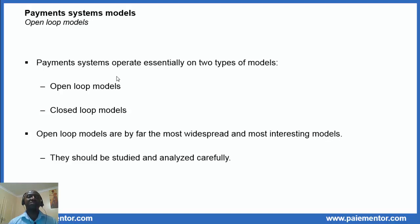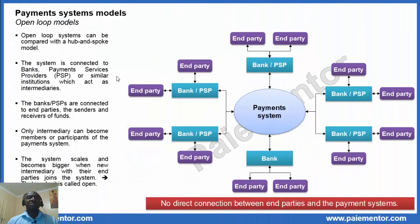In the rest of this video we will focus on open-loop models. So what are they? Open-loop systems can be compared with the hub-and-spoke model. The system is connected to banks, payment service providers or similar institutions which act as intermediaries, and the banks are connected to end parties — the senders and receivers of funds. So there is no direct connection between end parties and the payment system, as you can see on the picture. The payments are sent from an end party to its bank or PSP, then from that bank to another bank through the payment system, and finally to the receiving bank that delivers the payments to its end party customer.